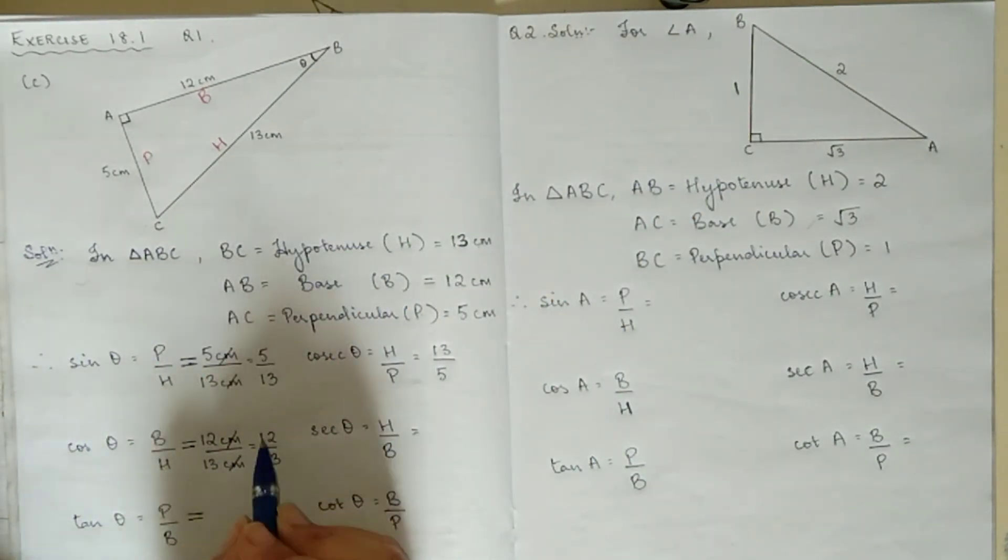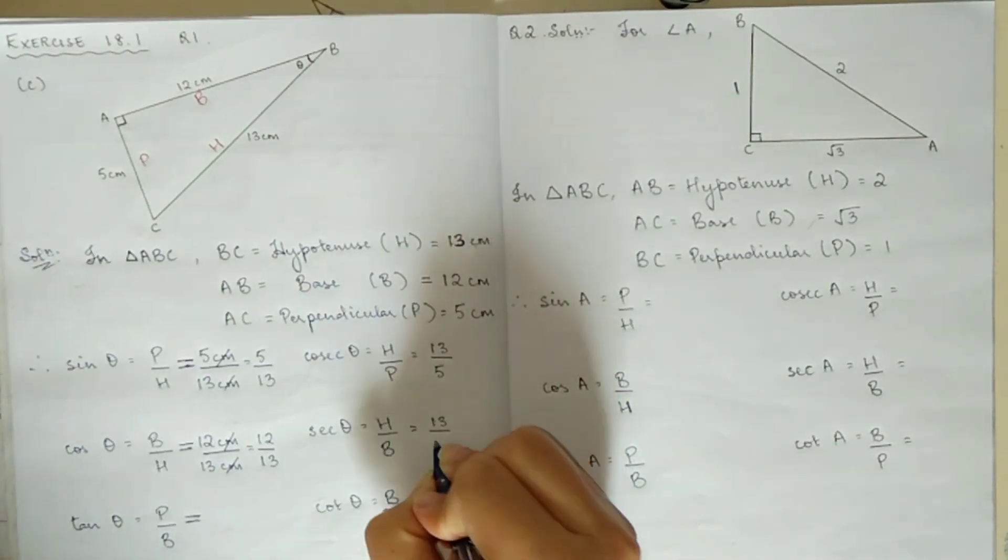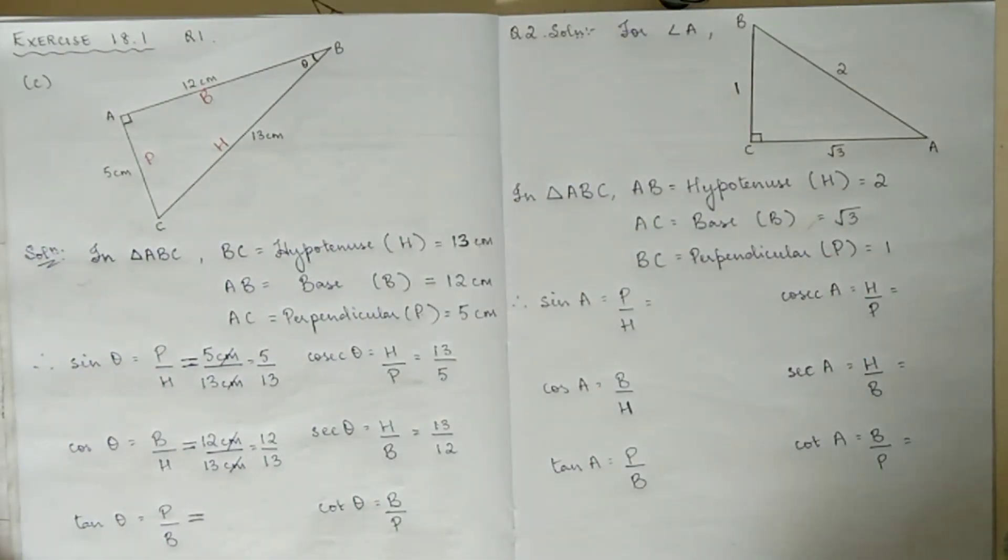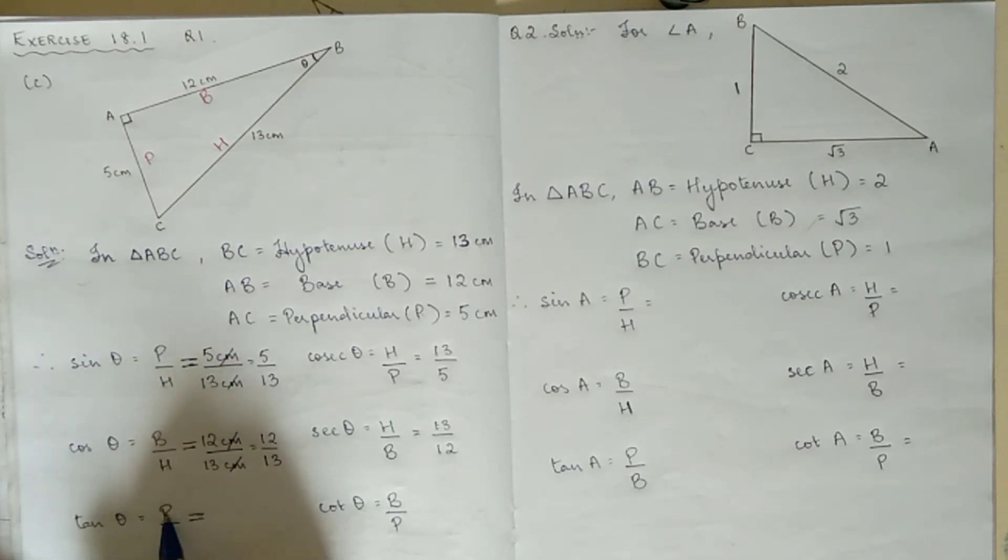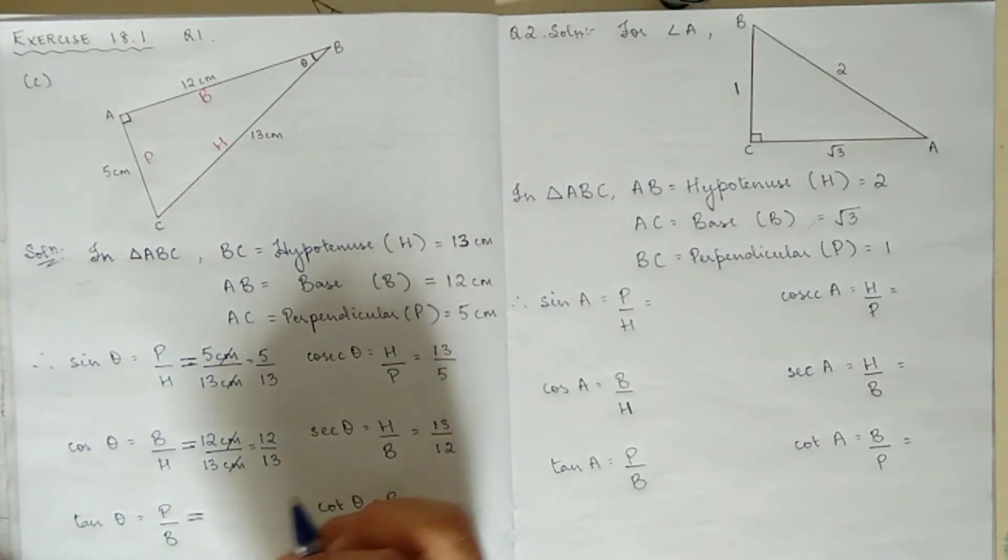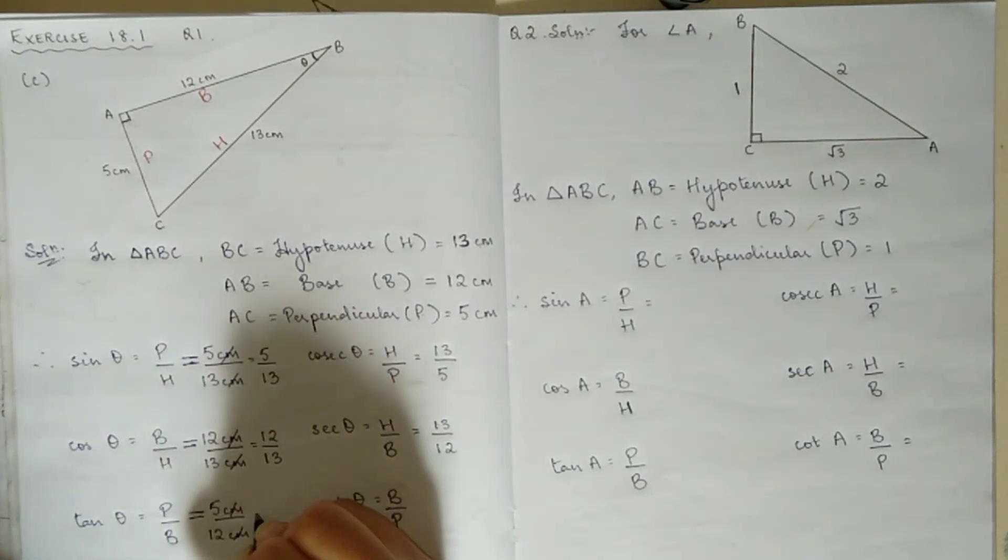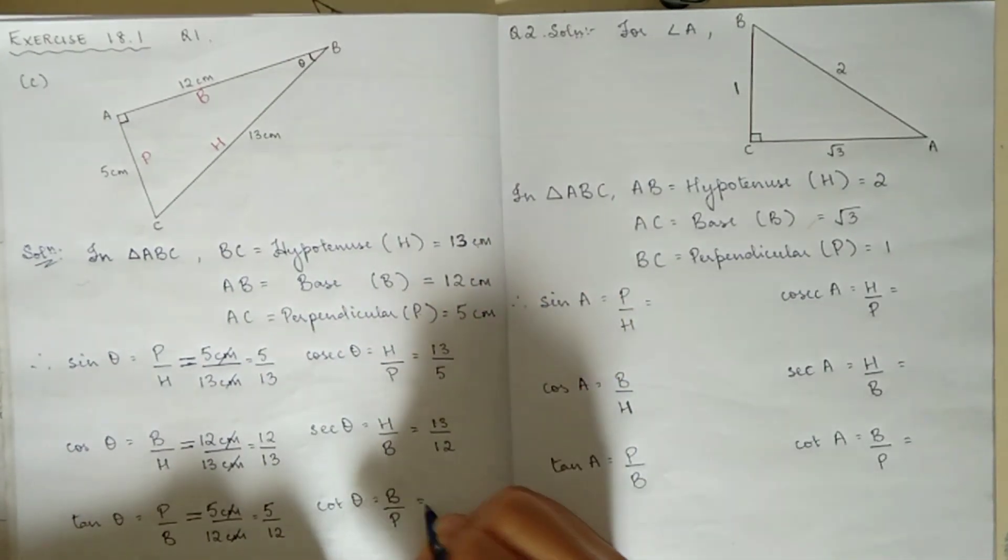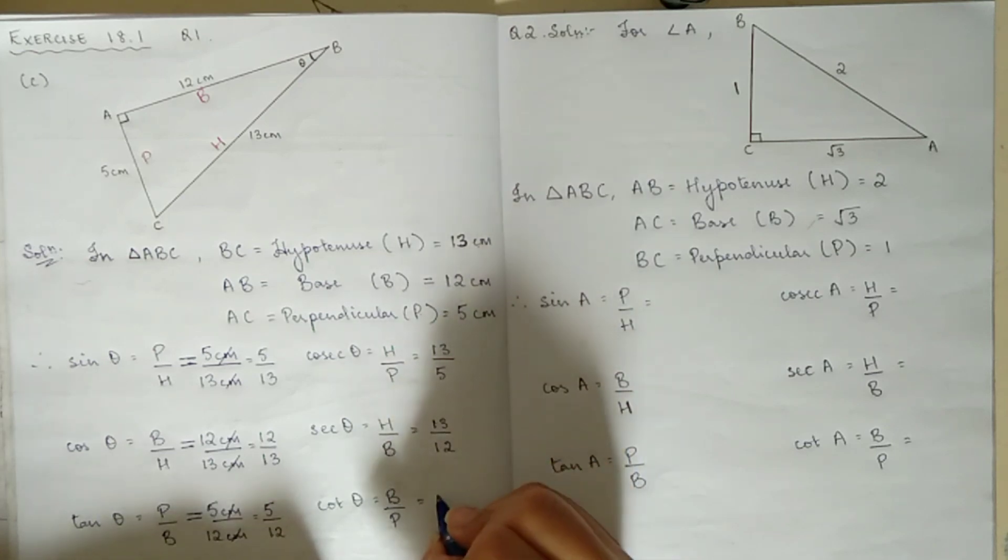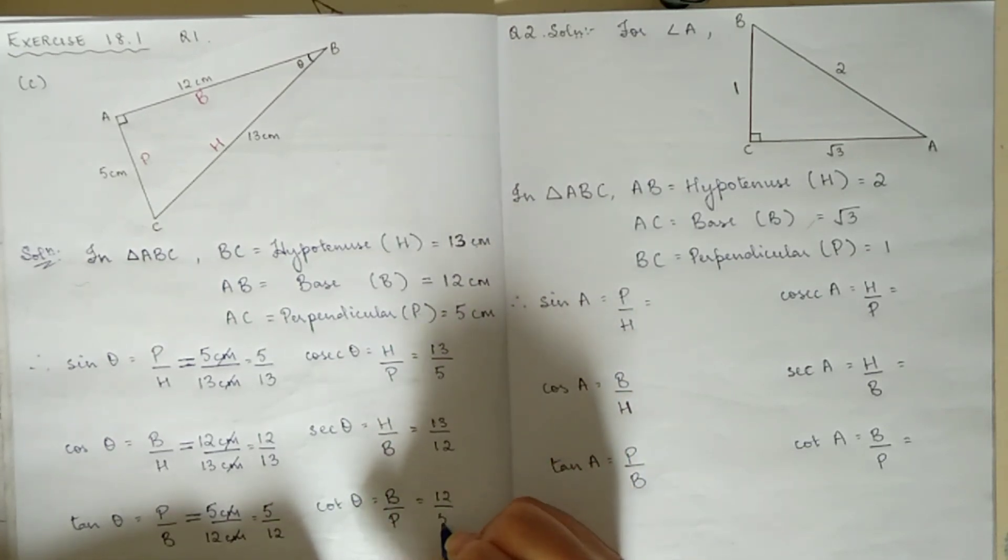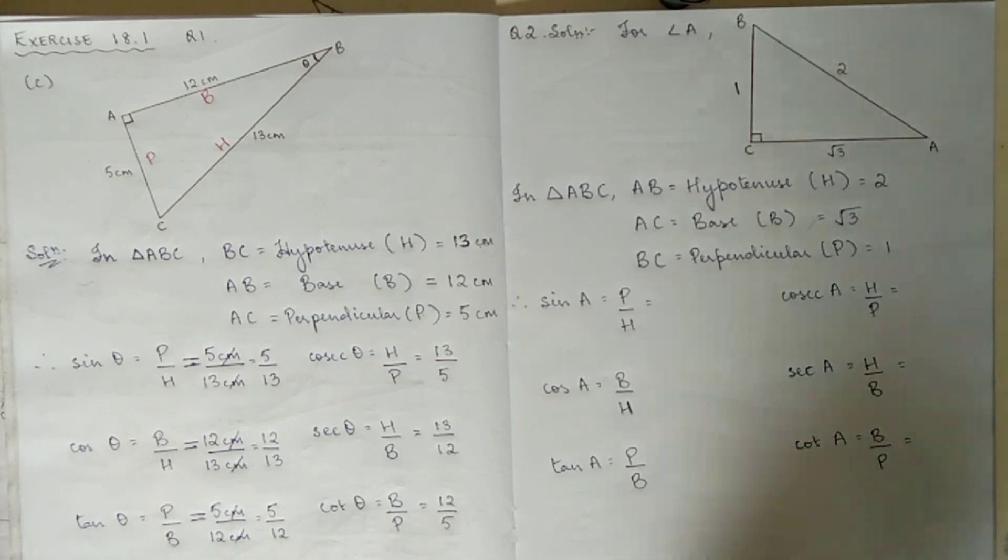If B by H is 12 by 13, then H by B will be 13 by 12 for sec. Next, tan is P by B, so P is 5 cm and B is 12 cm, giving us 5 by 12. The reciprocal for cot is 12 by 5, and that is it.